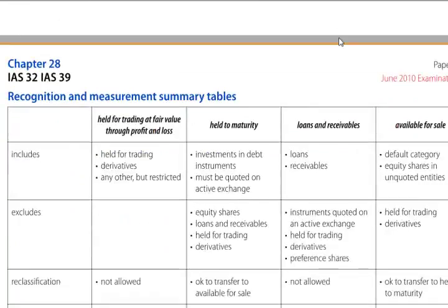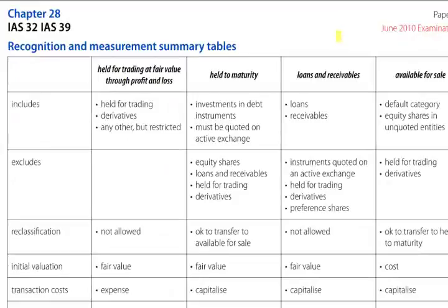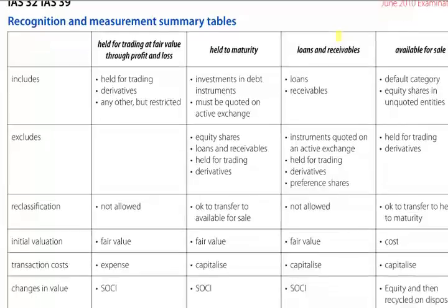So I'm looking particularly at page 147, chapter 28. This sets out the recognition and the measurement summary table for both financial assets and financial liabilities. It includes, well you can read the inclusions: held for trading, derivatives and any other, but the restricted category is held for trading at fair value through profit and loss.